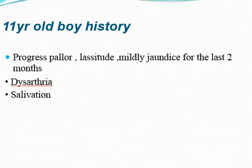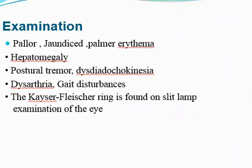The next scenario is an 11-year-old boy who came with a history of progressive pallor, lassitude, and mild jaundice for the last 2 months, along with dysarthria and excessive salivation. Examination shows pallor, jaundice, palmar erythema, hepatomegaly, postural tremor, dysdiadochokinesia, dysarthria, gait disturbances, and KF ring found on slit lamp examination of the eyes.